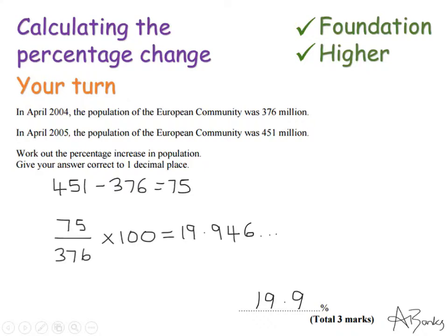Here's the solution. You should have got that the change was 75 million. So I do 75 divided by the starting amount, which is 376, and times by 100. On my calculator, to one decimal place, the answer is 19.9%. Thank you for watching.